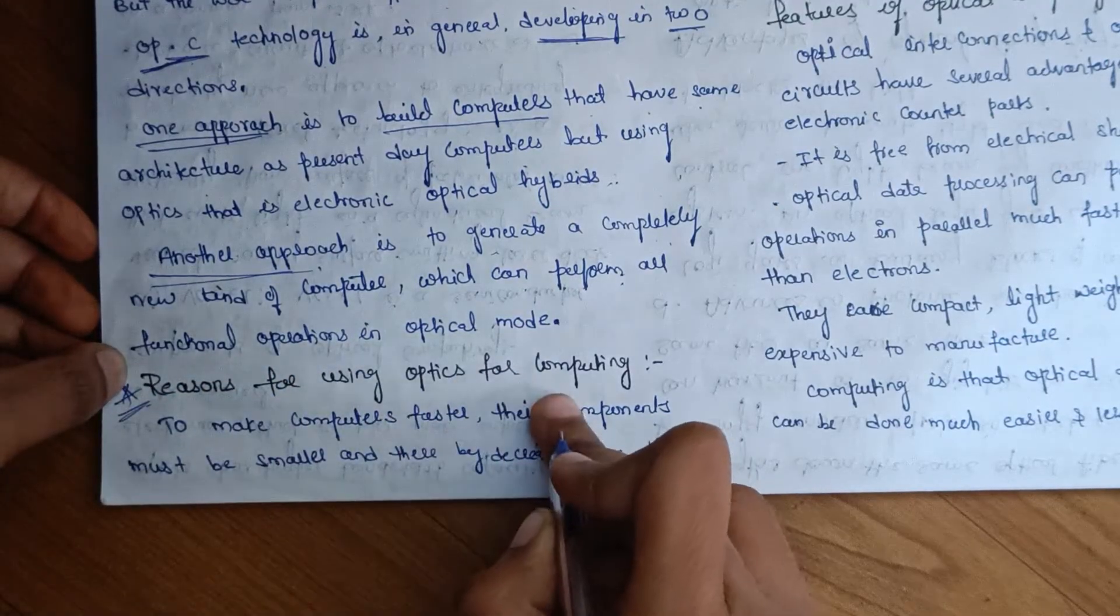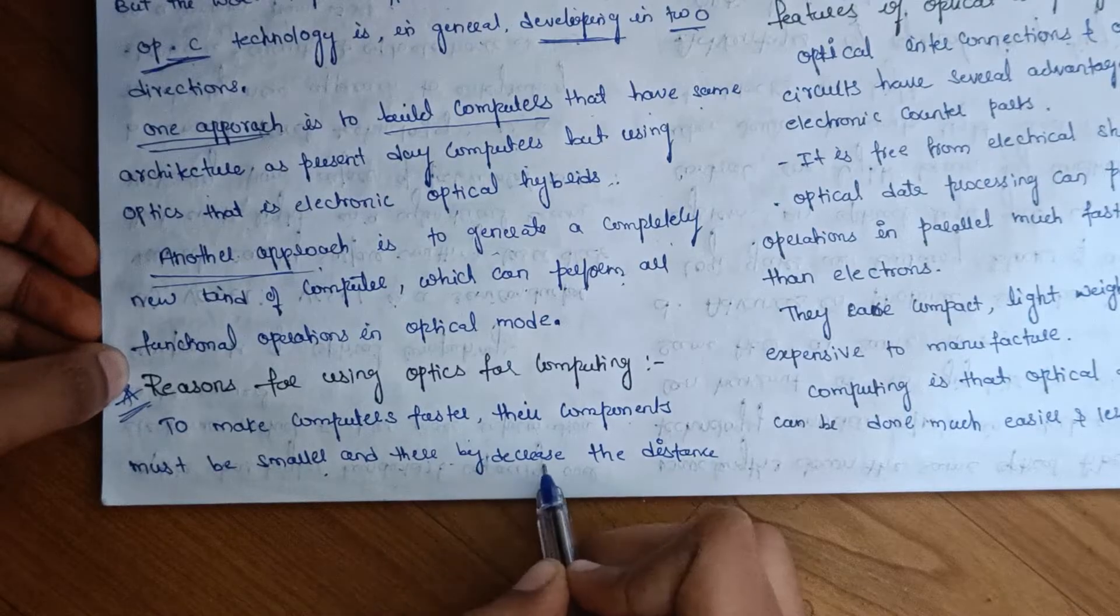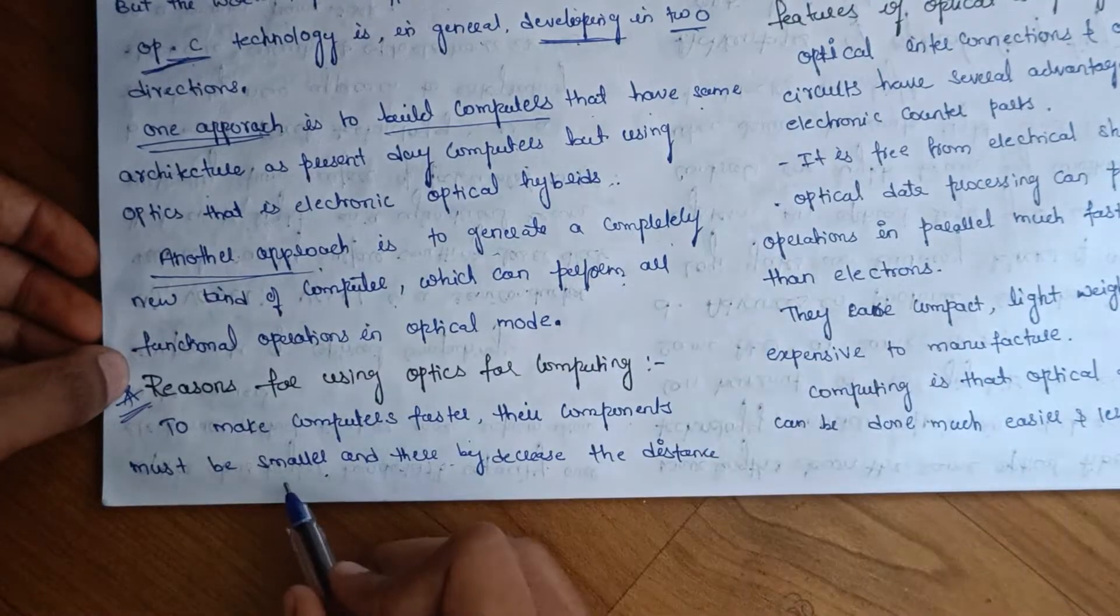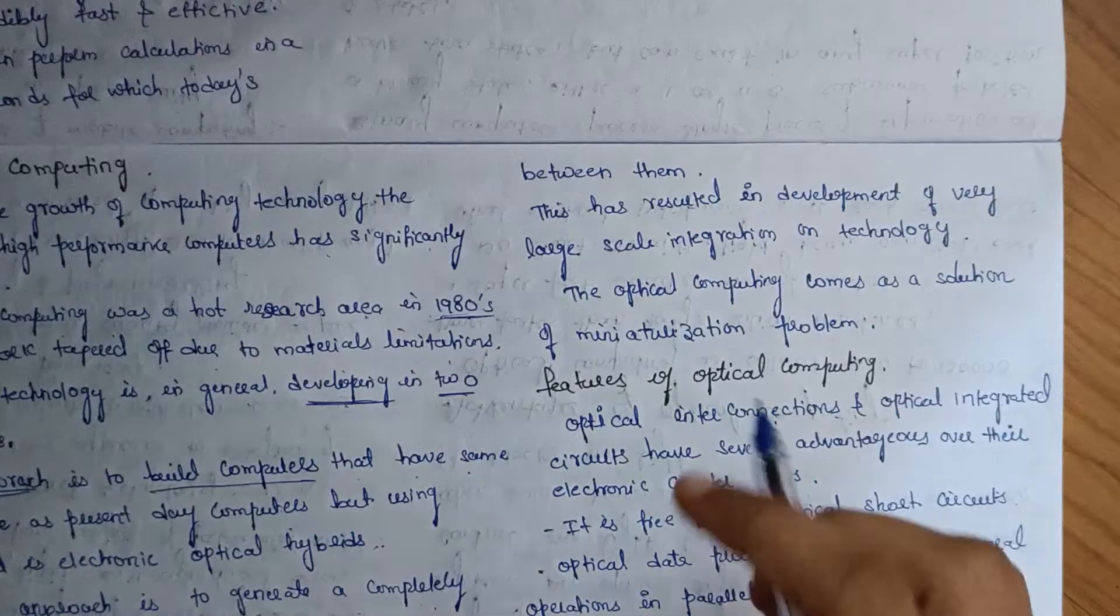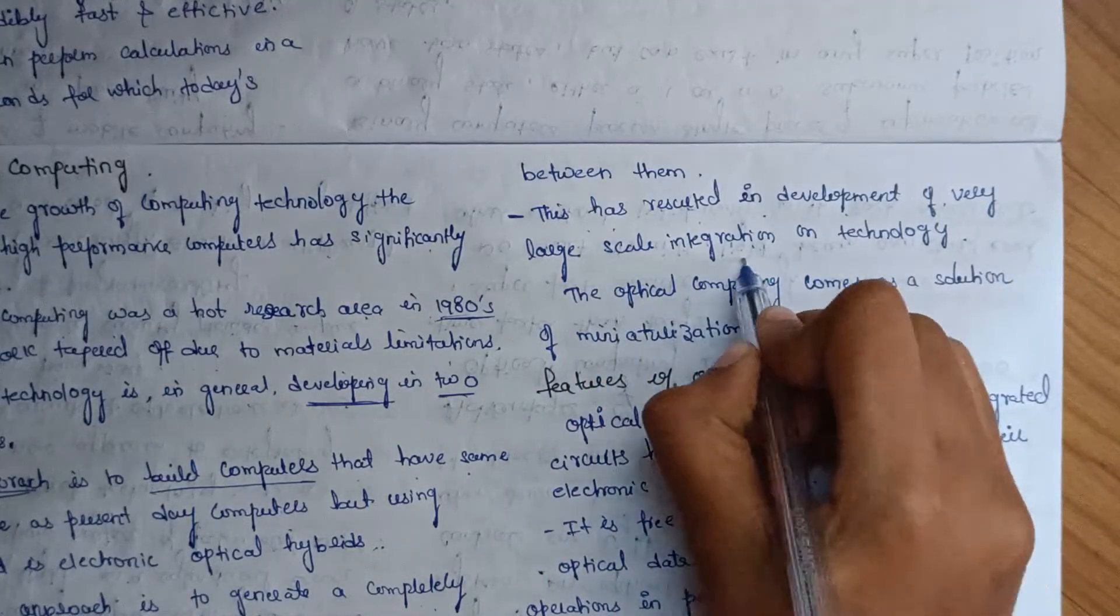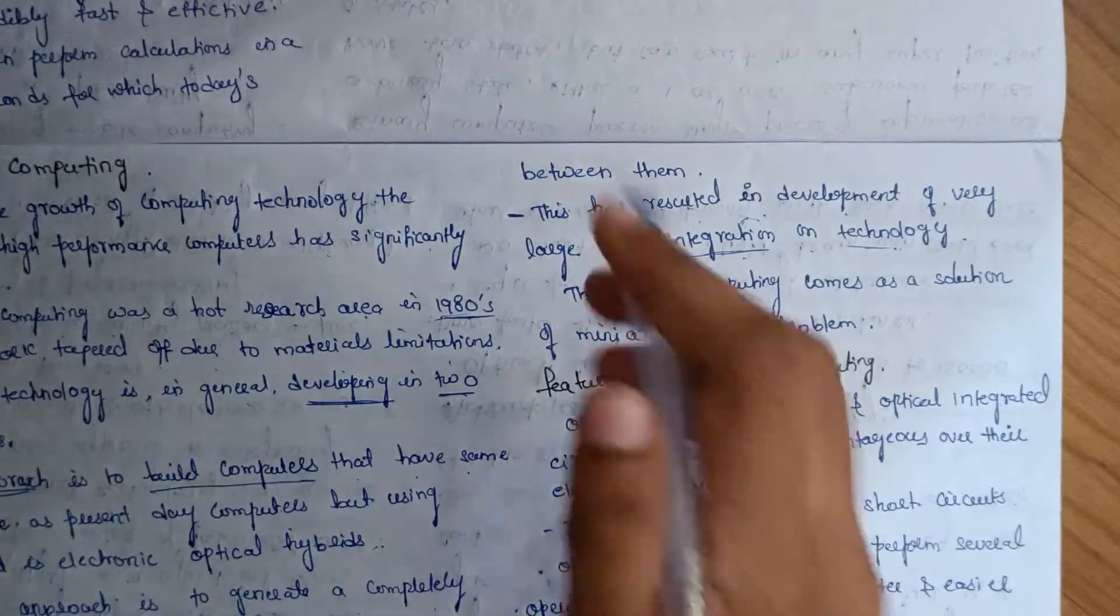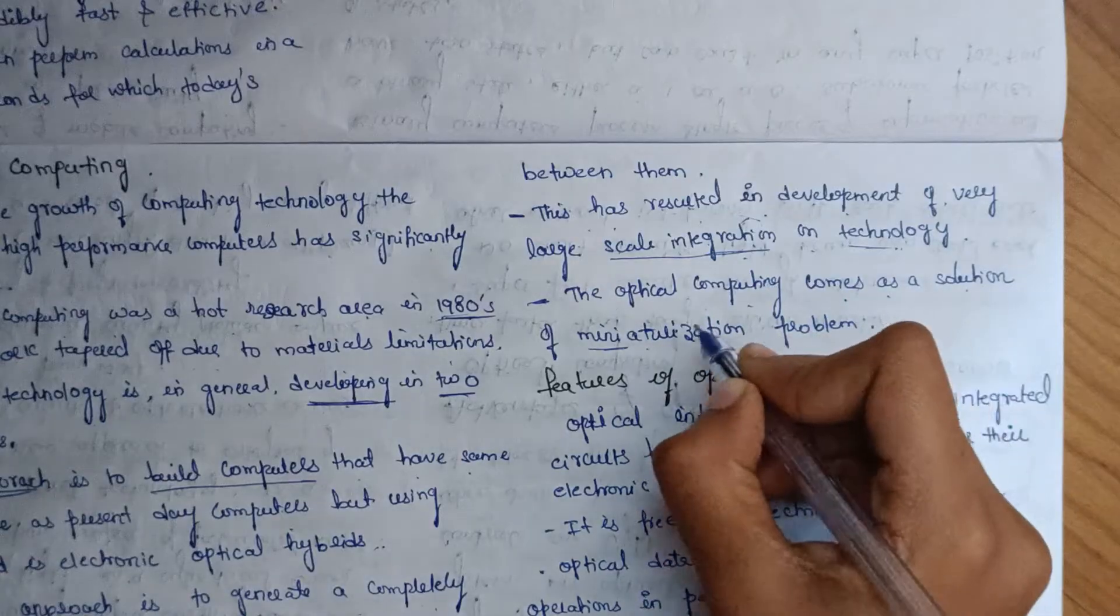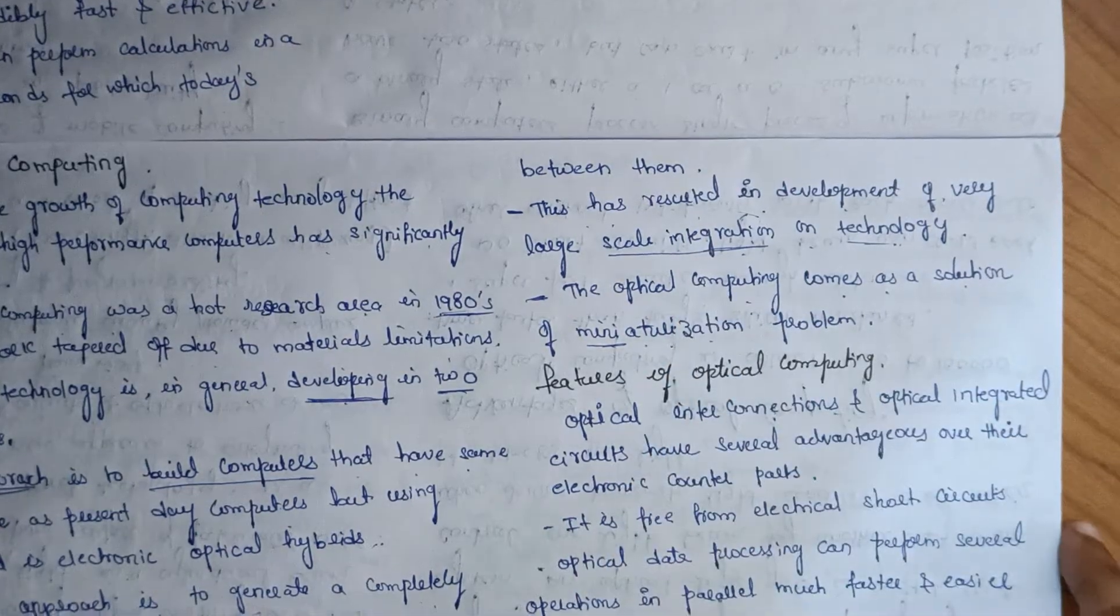Reasons: To make computers faster, their components must be smaller and thereby decrease the distance between them. This has resulted in development of very large scale integration technology. Optical computing comes as a solution in miniaturization problems, providing solutions to these problems.